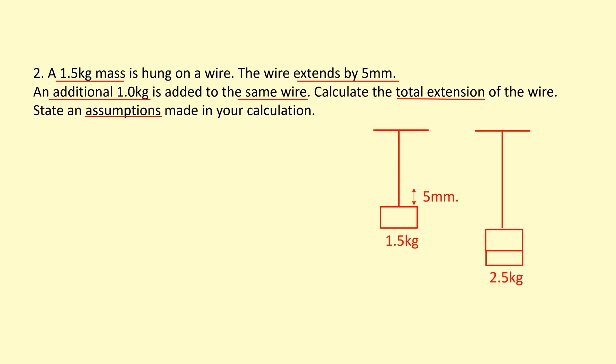I'm adding an additional 1 kilogram. So the actual total mass is 2.5 kilograms. I can actually just use ratios because I know that the force and extension are directly proportional. So I can see the force here, which is the same as the mass because the mass is going to create the weight. It's increased by a factor of 2.5 over 1.5, which is around 1.67. So we expect the extension to increase by the same factor. So I'm going to multiply the 5 millimeters by 1.67, and that gives me an extension of 8.3 millimeters.